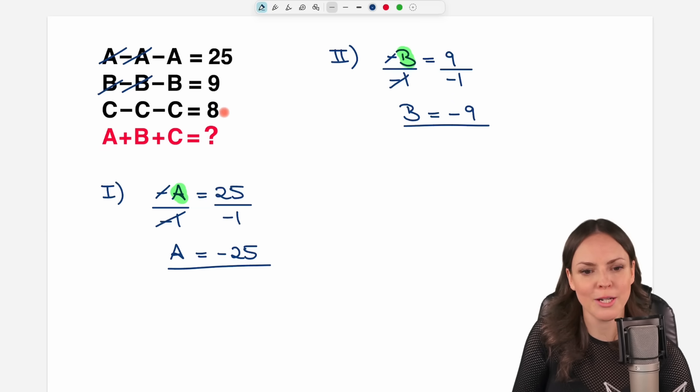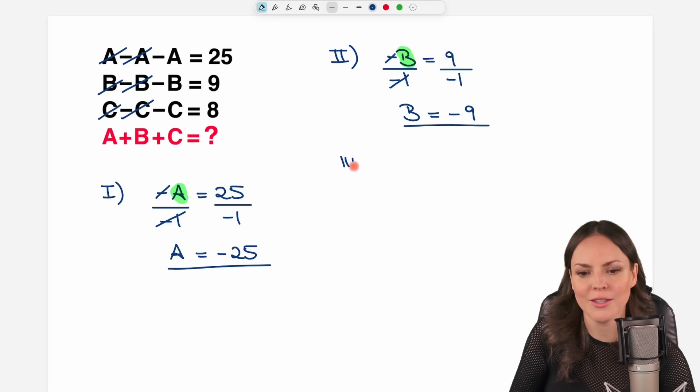Same thing with the third equation. We have C minus C, it cancels out. So in the third equation, we only have negative C here, which is equal to 8.